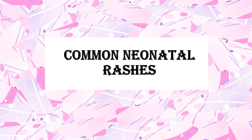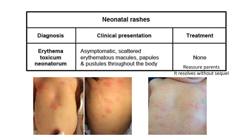In this video we will discuss common neonatal rashes. First is erythema toxicum neonatorum. It is asymptomatic and scattered — erythema toxicum presents as macules, papules, or pustules which are present throughout the body of the neonate.